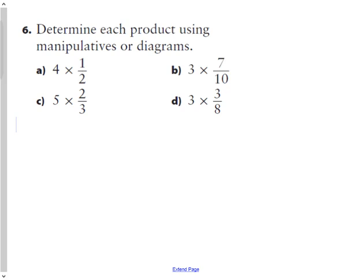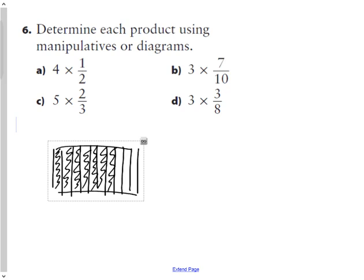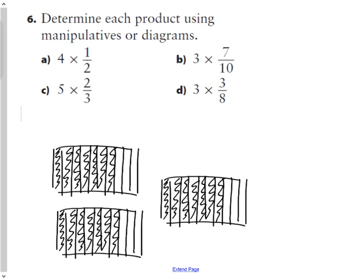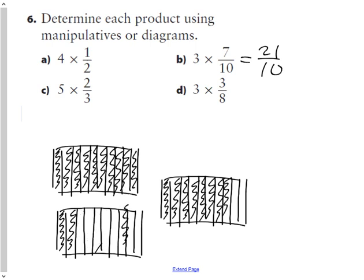Part B: three times seven-tenths. I draw seven-tenths, then double it, then triple it. How many tenths do I have in total? Twenty-one tenths. As an improper fraction that's 21/10. If I redistribute three tenths to each group to complete wholes, my answer as a mixed fraction is two and one-tenth.